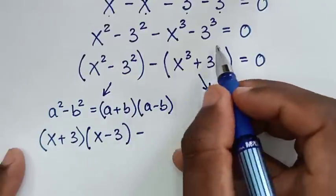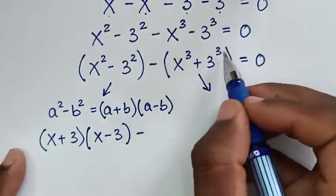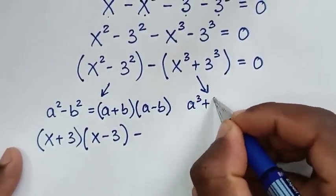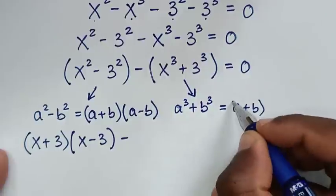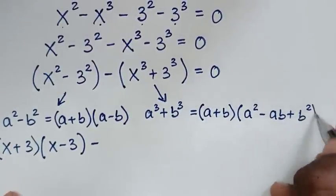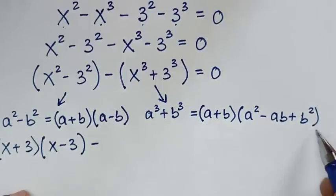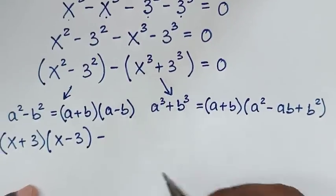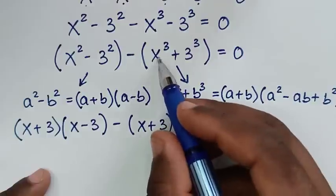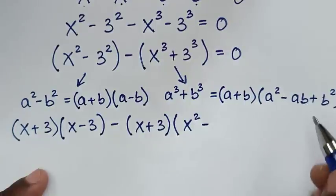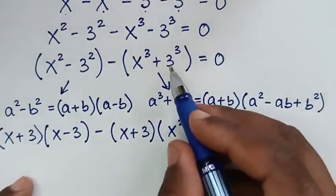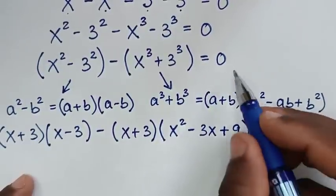For this part, x cubed plus 3 cubed is in the form of a perfect cube, so we apply: a cubed plus b cubed equals (a plus b)(a squared minus ab plus b squared). Applying this gives (x plus 3)(x squared minus 3x plus 9), equal to 0.